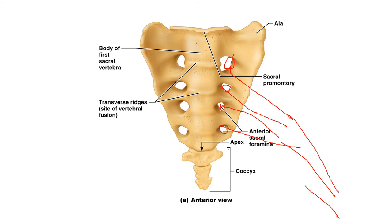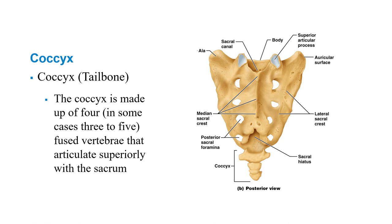The coccyx is made up of three to five fused vertebrae — some authors say three, some four, everyone's anatomy is a little different. There are coccygeal nerves exiting in between each segment.